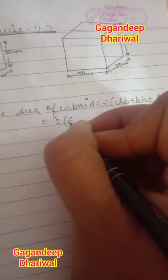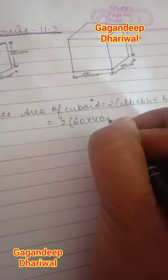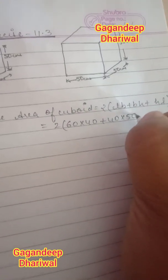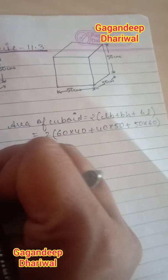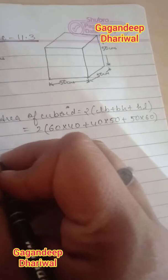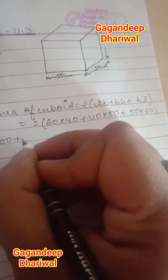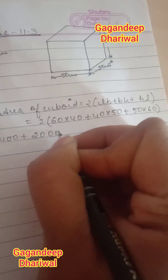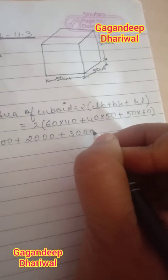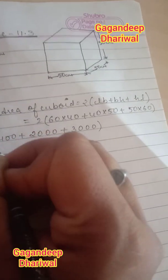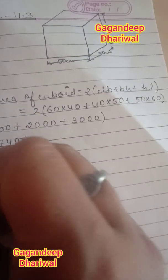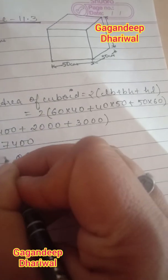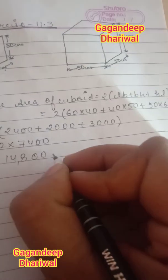Putting in the values as given: 2(16×40 + 14×50 + 15×16), which gives 2(640 + 700 + 240) — wait, calculating: 2400 + 2000 + 3000 = 7400, and then 2 × 7400 = 14,800 square centimetres. Since this is area, the unit is centimetres squared, so the surface area of the cuboid is 14,800 cm².